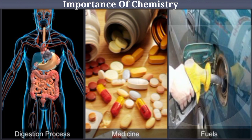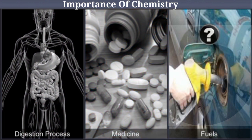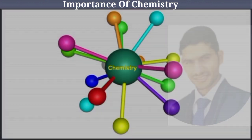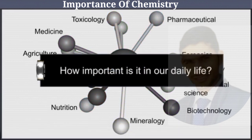Let's look at the various importance of chemistry. The digestion of food involves various biochemical reactions. The medicines we take are organic compounds, and the fuel which runs vehicles is nothing but hydrocarbons. Chemistry is also interlinked with other branches of science like forensics, environmental chemistry, and biotechnology.